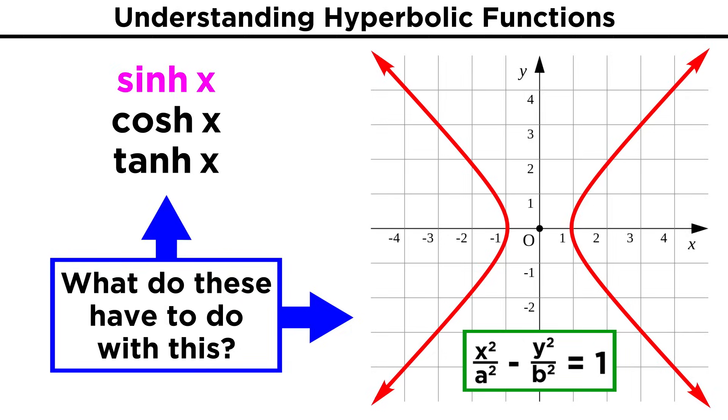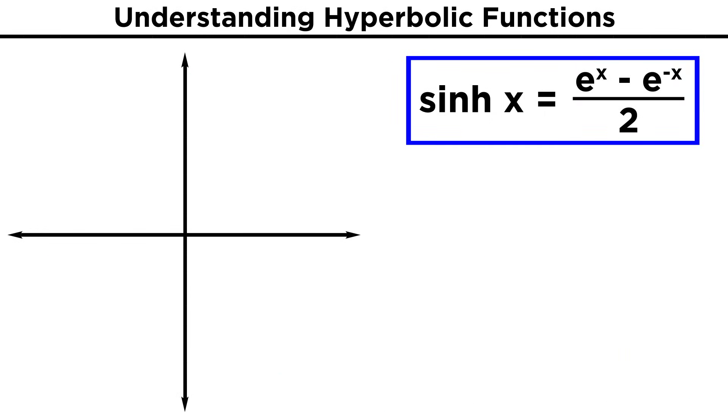Well let's look at hyperbolic sine x. This is equal to e to the x minus e to the negative x over two. Now, what does this mean graphically? Well let's take this expression and break it up into two terms. One half e to the x minus one half e to the negative x.